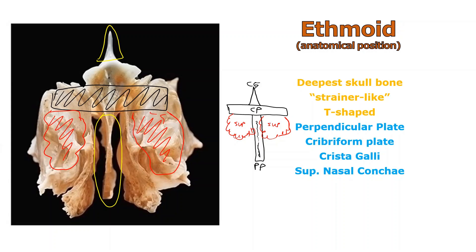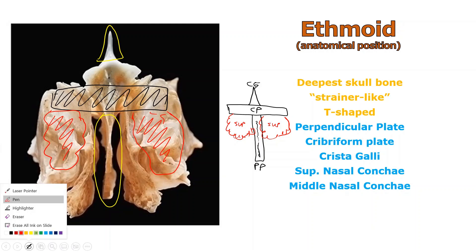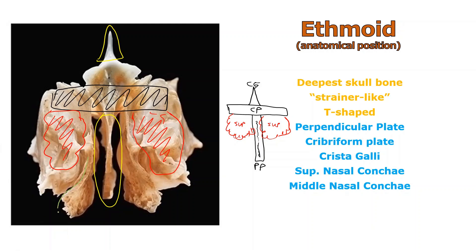You would think that the other things dangling down would be the inferiors, but they're not. These teardrop-shaped structures on each side are the middle nasal conchae. The inferiors are actually considered to be their own separate pair of facial bones — not part of the ethmoid.